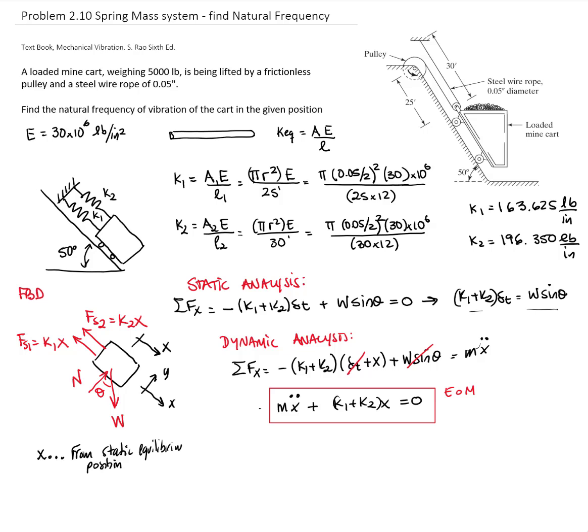The natural frequency will be the square root of K equivalent divided by mass. In this case, it's K1 plus K2 divided by the mass.